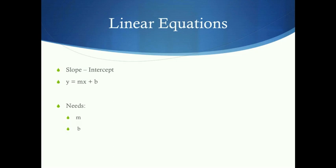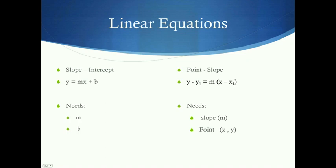The other type of equation we can use is point-slope: y minus y-sub-1 equals m times x minus x-sub-1. In order to use this, we need to know the slope, which is m, and an ordered pair — the y value goes here and the x value goes here. From there, we can simplify that into slope-intercept form, giving us something easy to graph with.